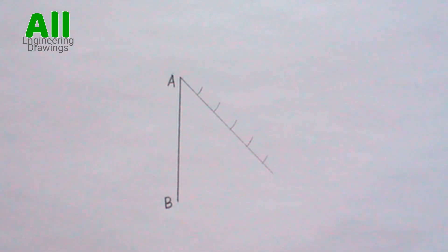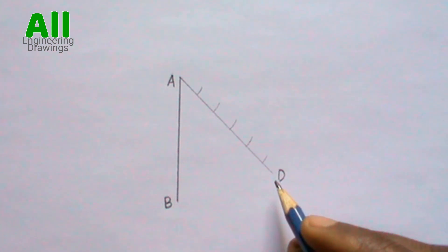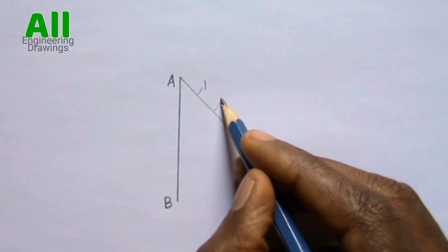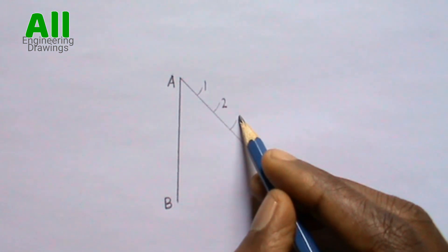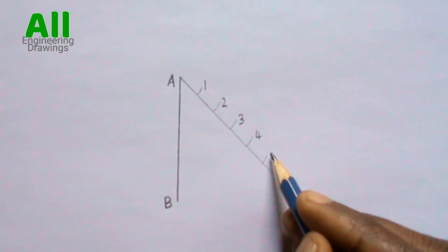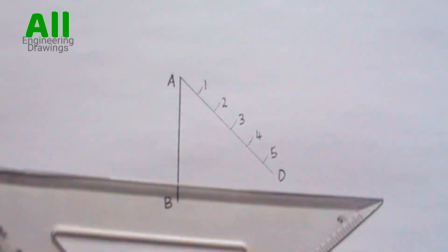Label the end of your inclined line and number the points you marked. Now set your ruler and your set square this way.